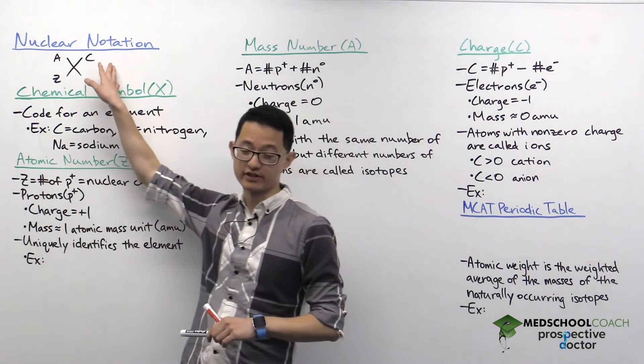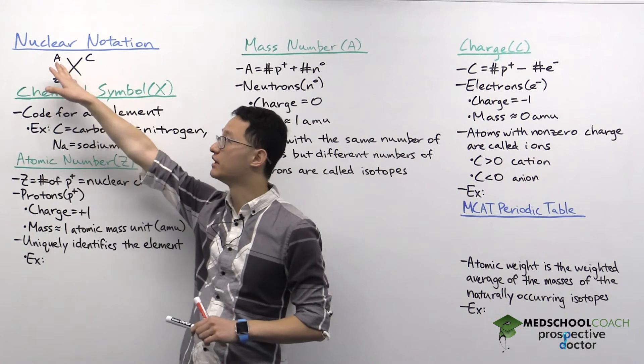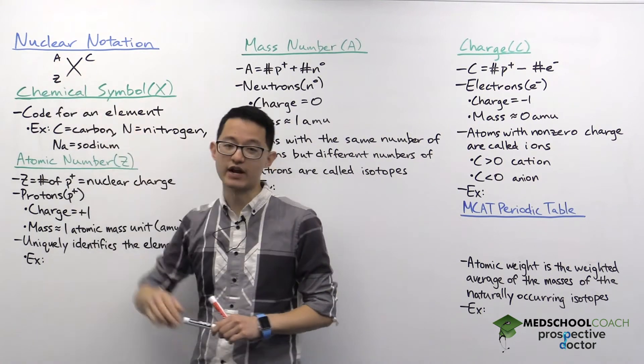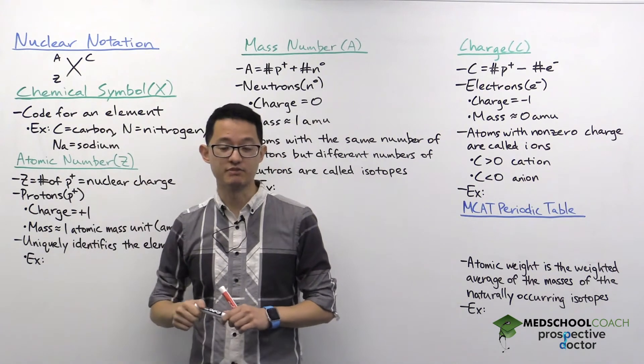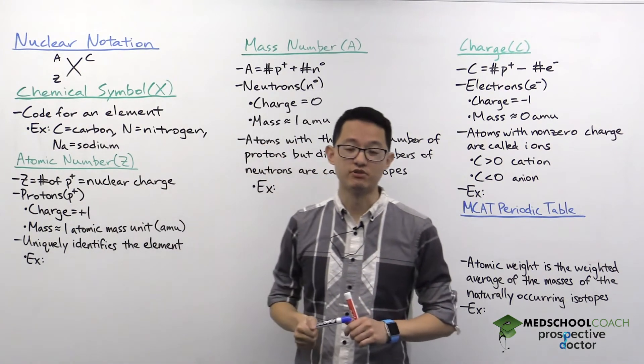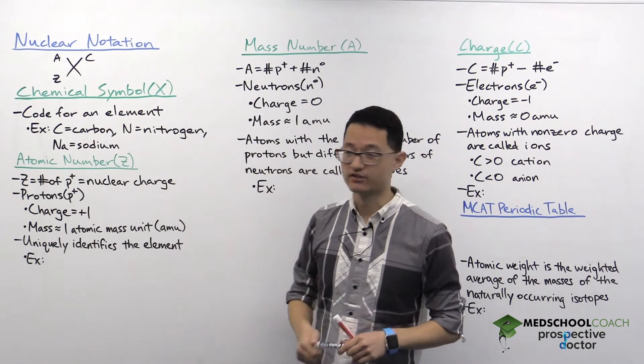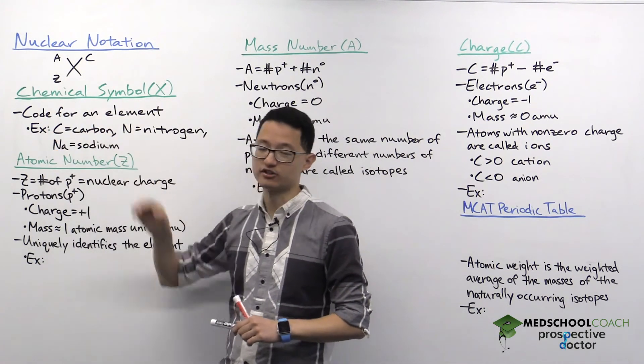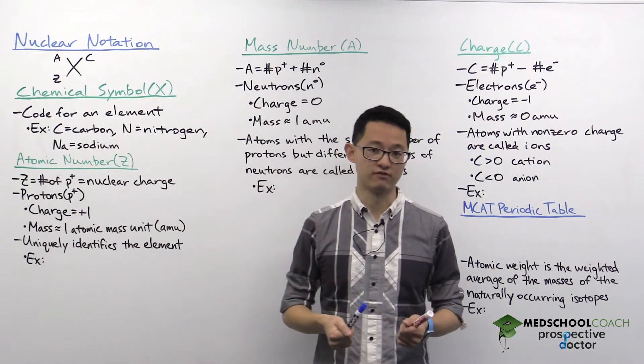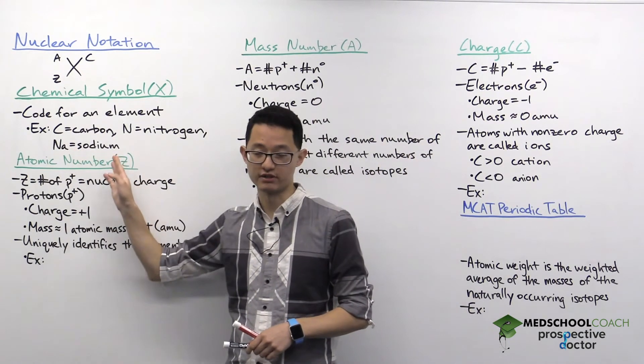Nuclear notation is a convenient way for us to visualize the mass number, atomic number, and charge for any particular atom. Right in the center we have X, which is the chemical symbol. You can think of the chemical symbol as the code for an element. It's very intuitive for some atoms such as C for carbon, N for nitrogen, but it's less so for other elements such as Na for sodium.